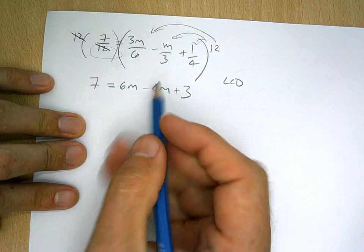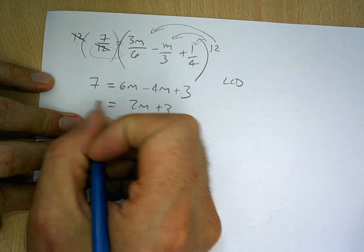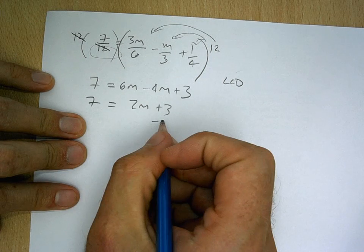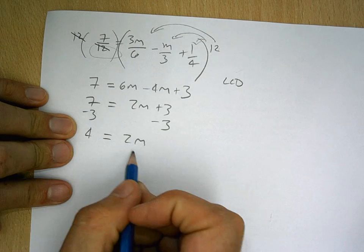So what I've done is I've basically simplified that, and now it's pretty smooth sailing. 6m minus 4m is 2m plus 3 equals 7. And what I'm going to do is I'm going to subtract 3 from both sides, and I'm going to have 2m over here on the right side equals 4.